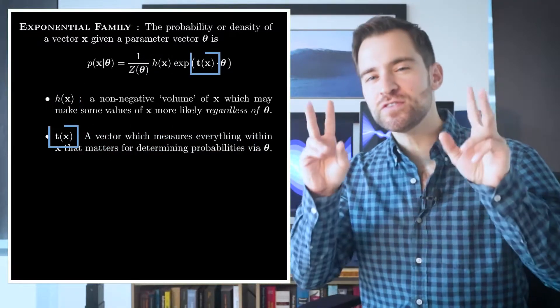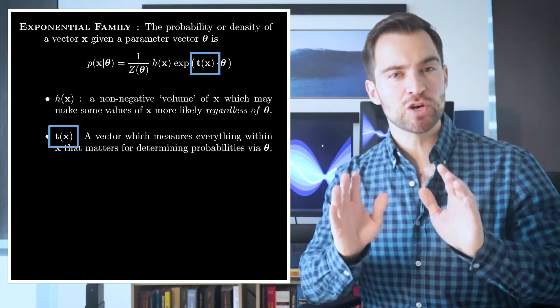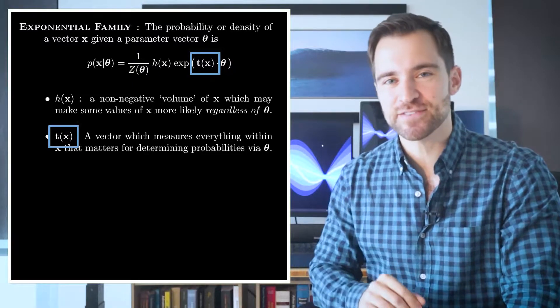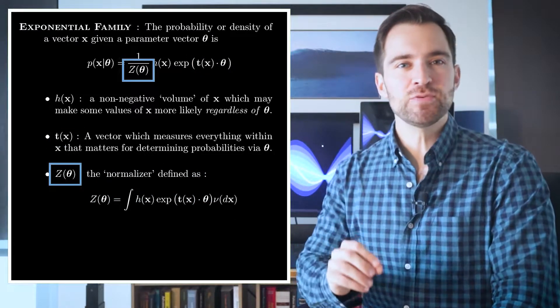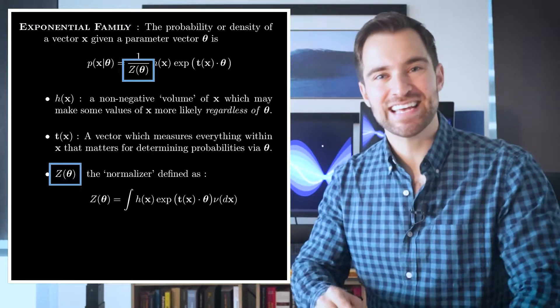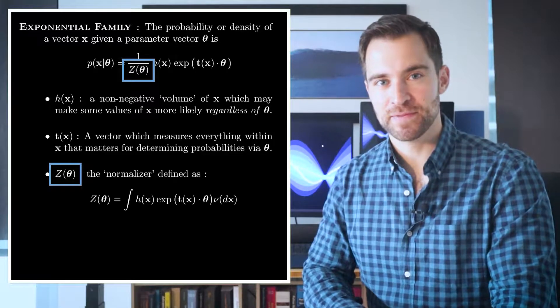t is a vector of sufficient statistics, meaning it measures everything that makes a difference for determining the probability of x in the eyes of the parameters. Z(θ) is the normalizer. It's there to ensure that integrating over all values of x yields a value of 1, as is required of any distribution.